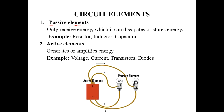This diagram shows the best example of DC circuit elements. Here, the active element is the battery — it generates energy. The passive element is the bulb — it receives energy from the active element.